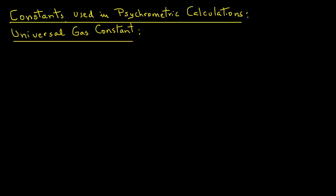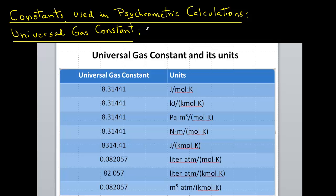There are several different units that are used for the universal gas constant, for ease of calculations. If you look at this table, we see the Ru, or the universal gas constant, expressed in different units.